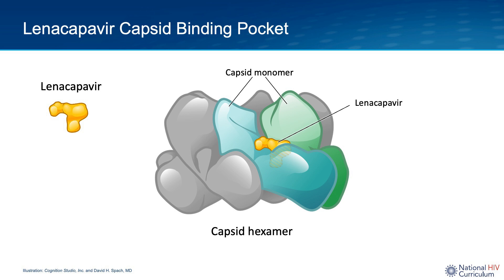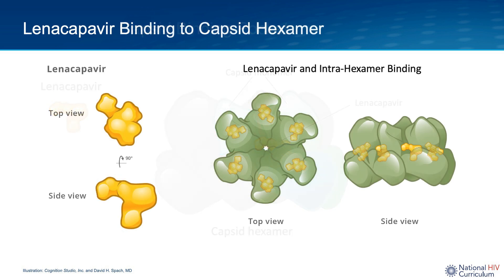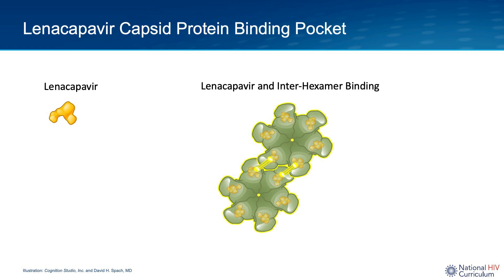This is referred to as intra-hexamer binding. Typically, six linacapavir molecules bind to each hexamer, which has the effect of locking all of the adjoining hexamer proteins more tightly together. This extensive intra-hexamer binding of linacapavir causes an abnormal increase in the stability and stiffness of each hexamer. To a lesser extent, linacapavir may also cause increased stabilization between hexamers, referred to as inter-hexamer binding, which further enhances the stiffness of the capsid lattice.